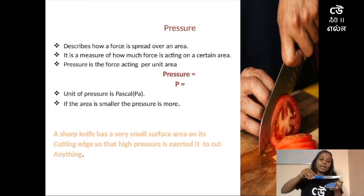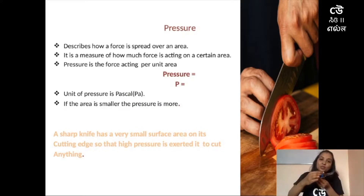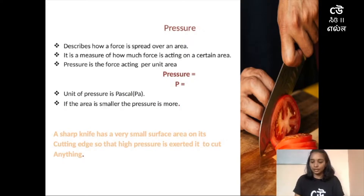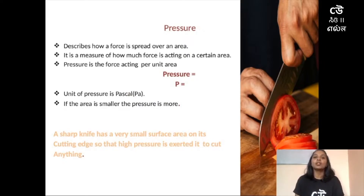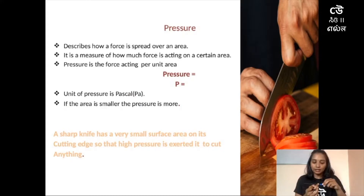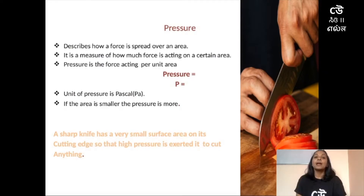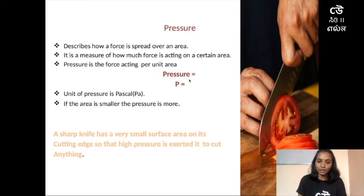Pressure means force acting per unit area. When I press the knife on any object, force is applied, and the force applied per unit area — where unit means equal to one — gives us pressure. Here in this slide you can observe someone using a knife to cut a tomato into small slices. Even there we can observe the concept of pressure, using the edge where the area is less. If the area is less, the pressure exerted will be more, because pressure is inversely proportional to area. Pressure equals force per unit area.